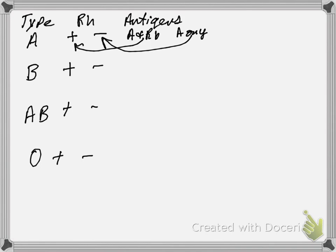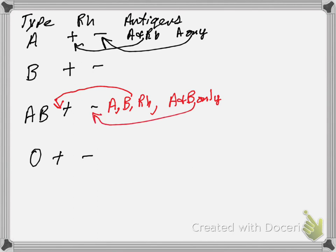So the antigens for AB positive — you would have both A, B, and RH, giving you AB positive. And if you were AB negative, then you would have A and B only — you wouldn't have those RHs. So remember O? O is that weird case where there's no A or B antigens. So if you have RH, then you're O positive. If you're O negative, then that would be no antigens at all.